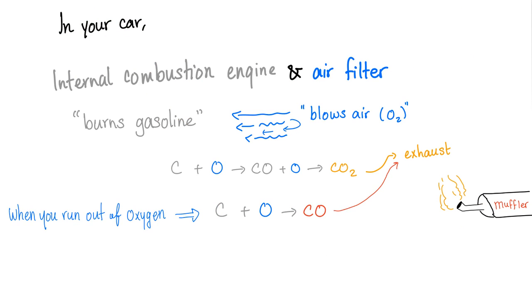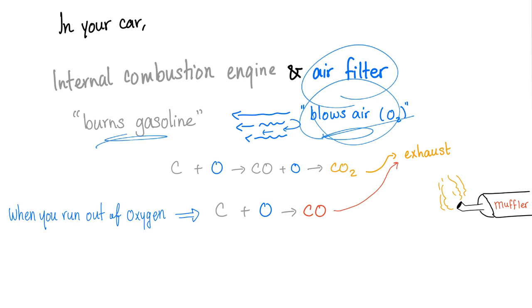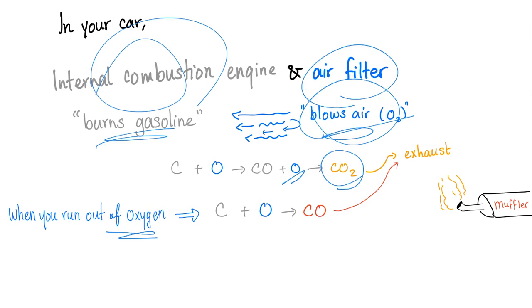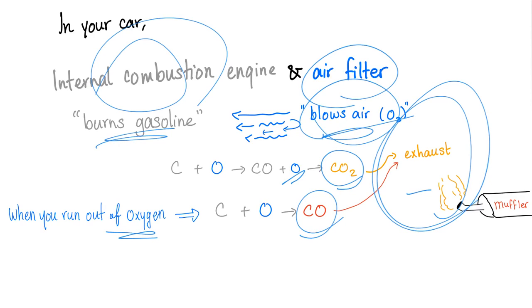In your car, you have two things: the internal combustion engine and an air filter. Oxygen aids in burning, so we need oxygen — that's what the air filter is for. It blows air, which contains oxygen, which helps burn gasoline in the internal combustion engine. We have CO₂ if oxygen is abundant. But if you run out of oxygen — like in a closed garage — carbon monoxide is going to form. Both of which will go out in the exhaust system.